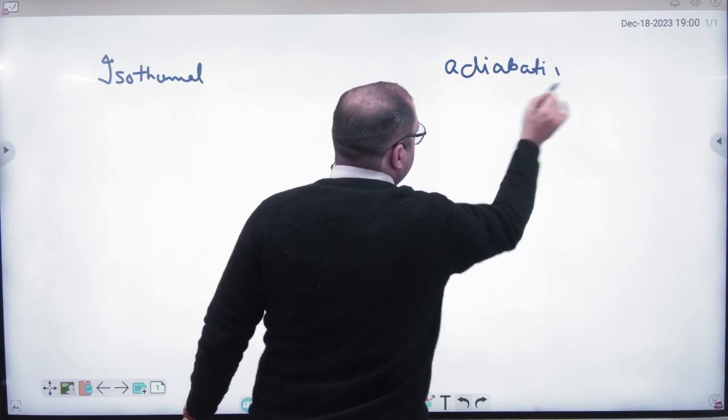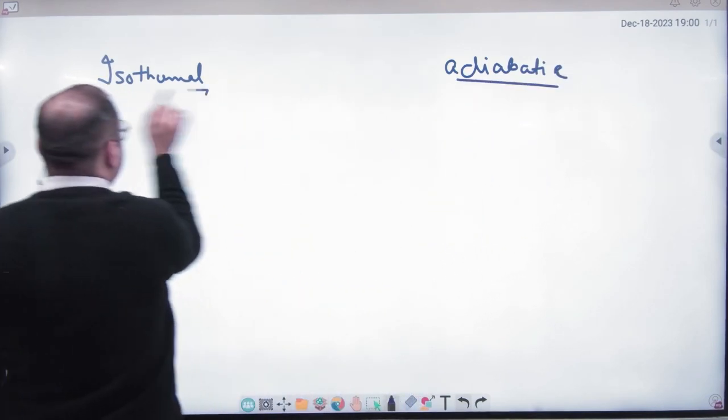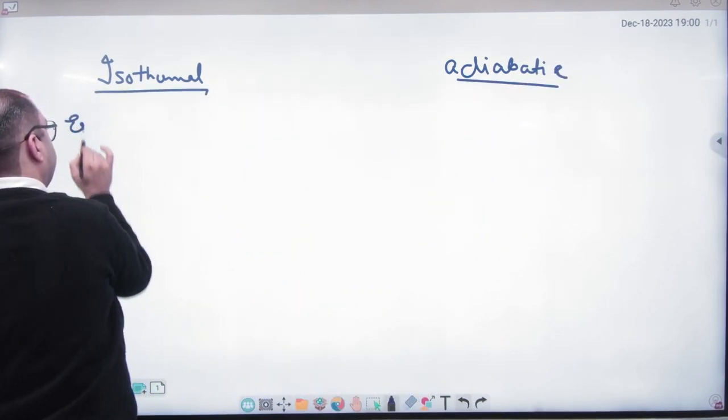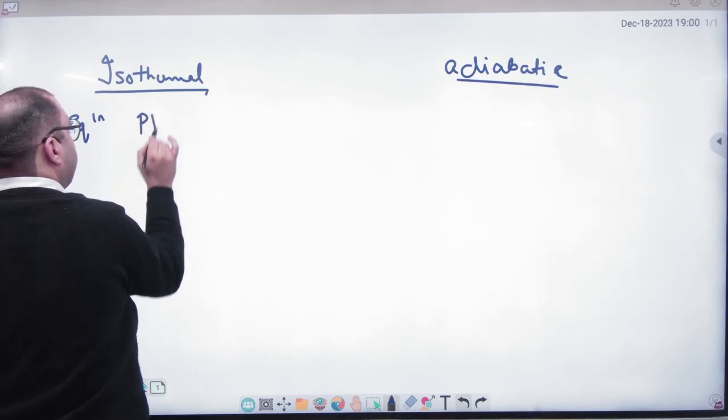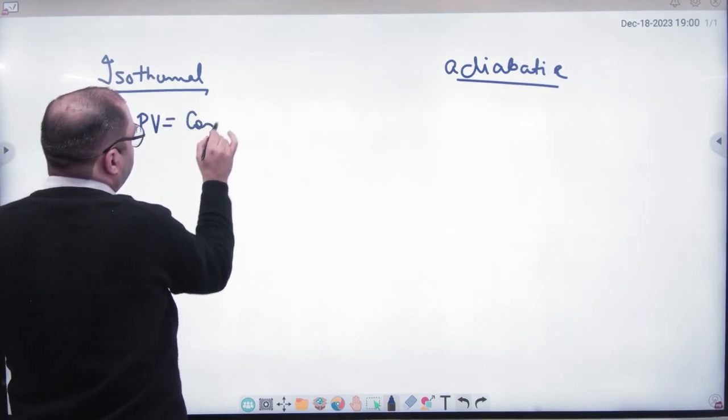First, gas equation. Isothermal equation is PV is a constant.